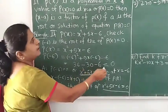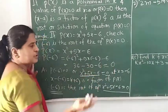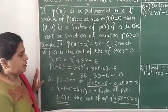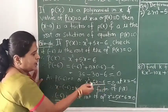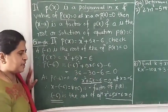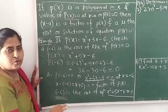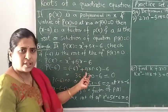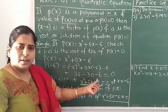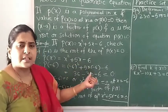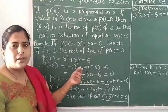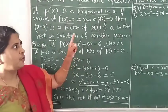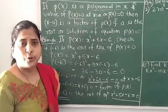So this is the method: whatever value is given, put it into your equation. If it satisfies the equation — meaning LHS equals RHS — it is the root, otherwise not. Based on this concept, we will solve question number 4 from practice exercise 2.1, where we have to determine if given values are roots of the given quadratic equation.